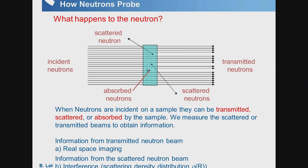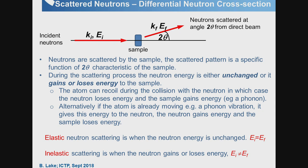I'll focus on the scattered neutron beam, where the neutron changes direction after interacting with the sample. This is an interference process that gives information about the density distribution of atom positions, their scattering power, and also the excitations. In a typical scattering experiment, we have incident neutrons with wave vector ki and energy Ei, scattered at angle 2θ with final wave vector kf and energy Ef.